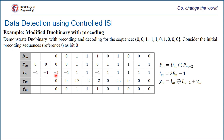Starting with the first sequence: minus 1 subtracted from minus 1 (two bits away) gives minus 1 minus (minus 1) equals 0. For the next bit: 1 minus (minus 1) equals plus 2. And so on: 1 minus (minus 1) equals plus 2, and minus 1 minus 1 gives minus 2. This continues until the last bit of the sequence, generating the sampled output at the receiver.